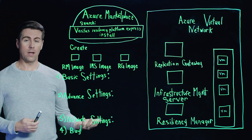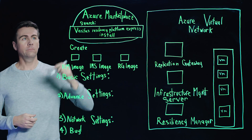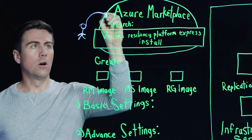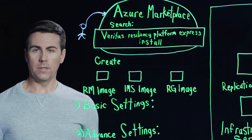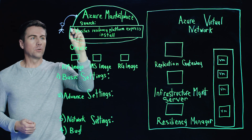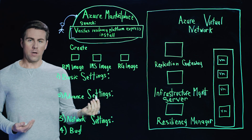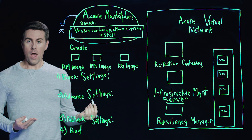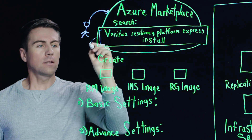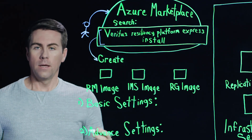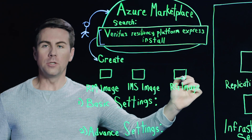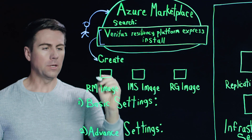So let's take a look at how this works. First, we'll log on to the Azure Marketplace and run a search for the Veritas Resiliency Platform Express install. Once located, we select that option and from there we can start the deployment process of the three images that we have as part of our solution template.